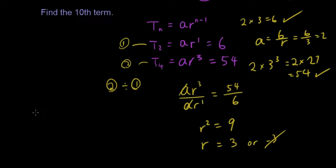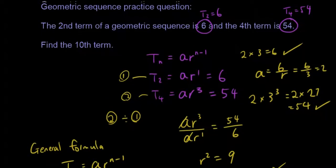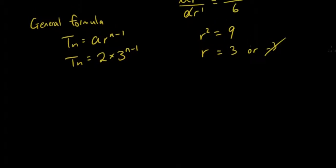So our general formula is T_n equals ar^(n-1). So T_n equals 2 times 3 to the power of n minus 1, where a is 2 and r is 3. Now we want to find the tenth term. So if n equals 10, T_10 equals 2 times 3 to the power of 9.